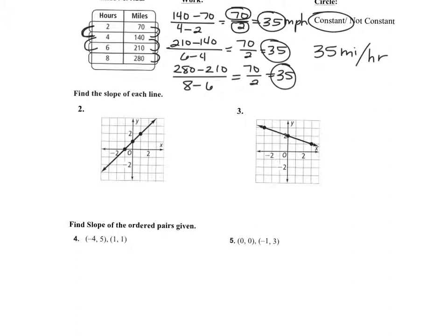So if I'm here and I go to here — because you always want to go from left to right — am I going up or down? Up. So that's a positive one. And then you always move right, and that would be a positive one also.